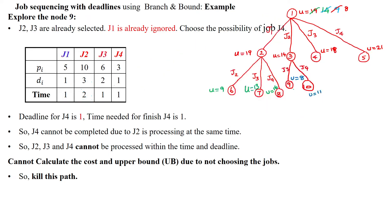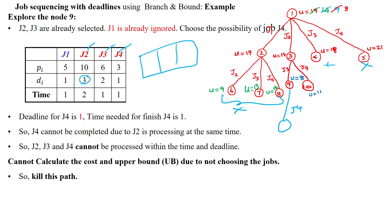The remaining unexplored combination is j2, j3, and j4. Maximum deadline among these three is 3. First two days are allotted to j2, the third day to j3, leaving no time for j4. This is not feasible either. All other branches are already killed, leaving only one valid solution.